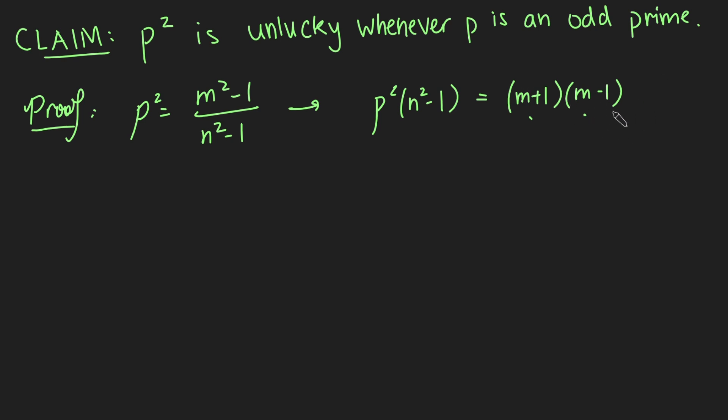And in fact, whichever one is a multiple of p will in fact also be a multiple of p squared, because the left-hand side is a multiple of p squared. So we're going to split this into two cases. The first case is going to be when m plus 1 is a multiple of p squared. So let's just call it lambda times p squared, where lambda is a positive integer.